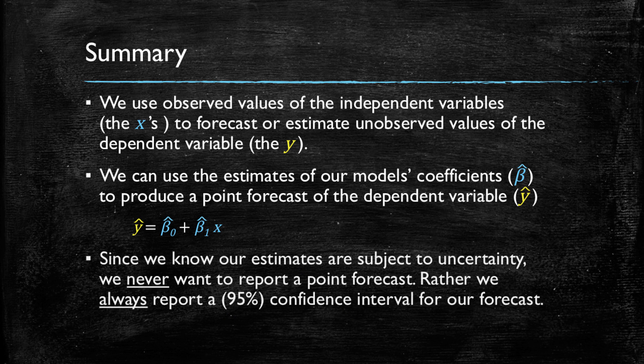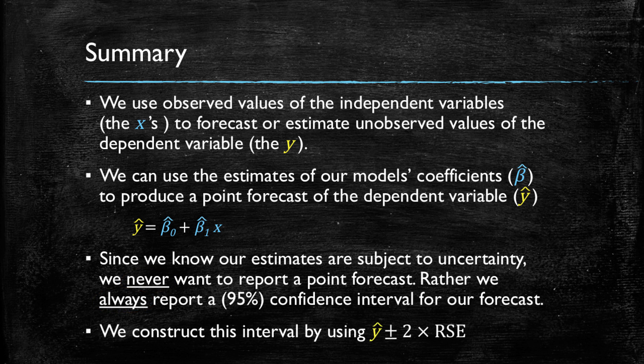Now, we already learned that since we are working with samples, we are dealing with uncertainty. So we never, and again, never, this is important, never want to report a point forecast. Rather, we understand that our estimates are subject to uncertainty and we will always report a confidence interval, in particular, a 95% confidence interval for a forecast. So never report a point estimate. Always report a confidence interval. And constructing the confidence interval is very simple. We simply get the point estimate for the dependent variable, depending on the values of x that we do observe, and then add and subtract 2 times the standard error of the regression. And this will give us the 95% confidence interval for a forecast. Thank you.